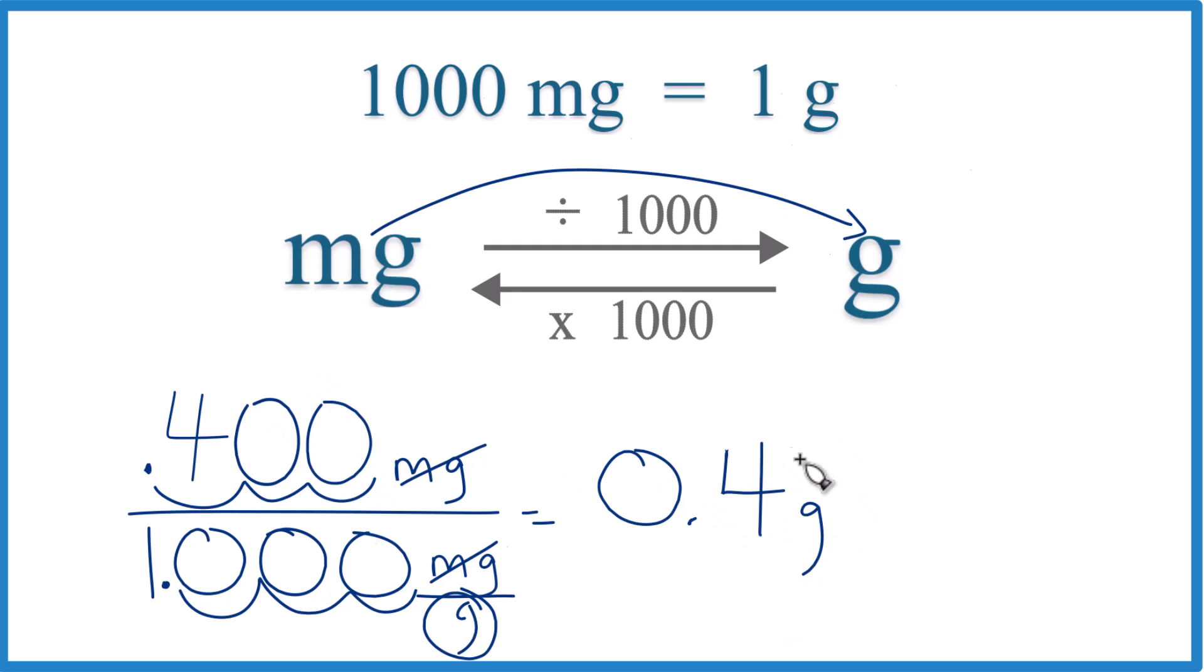You don't need these extra zeros on the end here. That's it. That's how you convert 400 milligrams to grams. The answer is 0.4 grams.